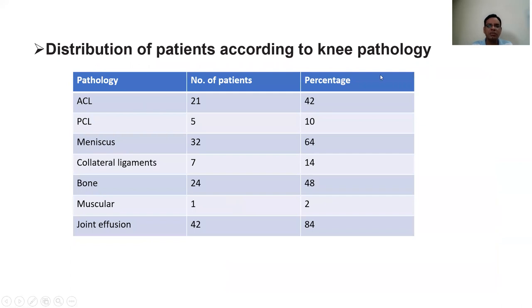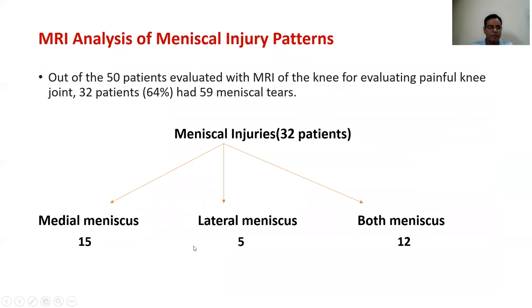Distribution of patients according to knee pathologies: ACL pathology in 21 patients, PCL in 5, meniscal pathology in 32% which was the most common finding in our study, collateral ligament injuries in 7 patients, bone contusion in 24, muscular injury in 1, and joint effusion found in 42 patients.